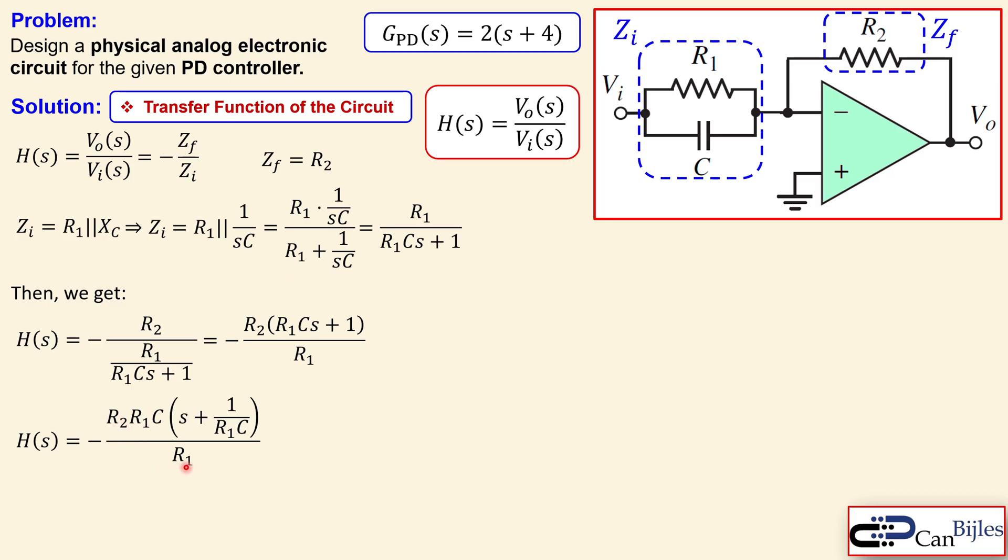Now we can simplify this further because I see the R1 and R1 can cancel each other out. And you will have this expression. Now we see minus R2 times C in the parentheses times the S plus 1 over R1 times C. This minus is just because it is an inverting action. So we can just ignore that for the moment. But that is now the transfer function we required from the circuit.